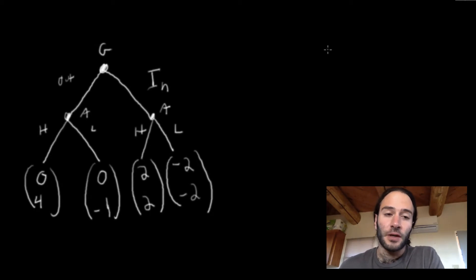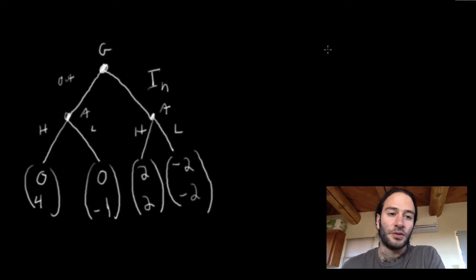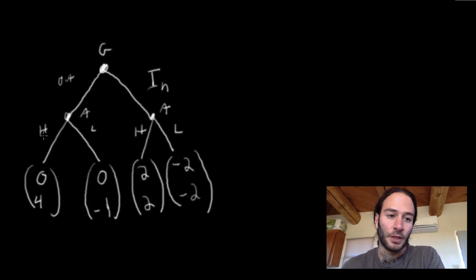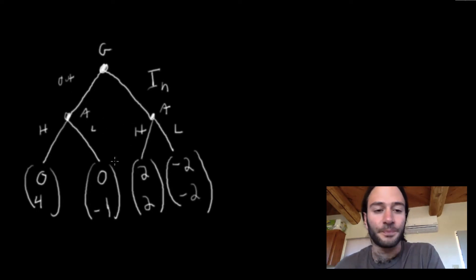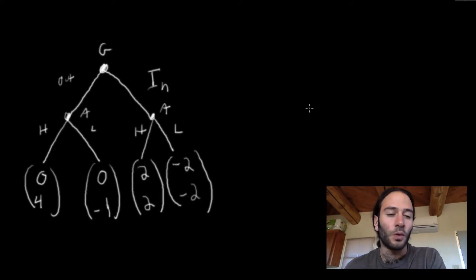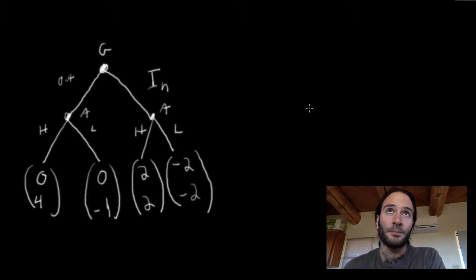Welcome back everybody. In this video we're going to find the Nash equilibrium of the game presented in the last video. We had two players, Google and Apple. Google is choosing whether or not to enter a market — it chooses in or out — and Apple chooses its pricing strategy once it observes what Google did, either a high price or a low price. We're going to solve for a Nash equilibrium and show that maybe Nash equilibrium is not what we're looking for. This process involves two steps.